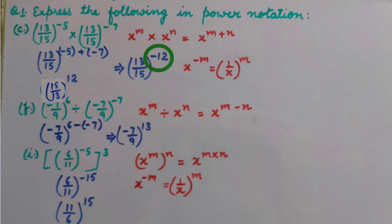Now we convert the negative power to positive using the law: x raised to power minus m equals 1 upon x, whole raised to power m. So we reciprocate 13 upon 15, giving us 15 upon 13, whole raised to power 12.